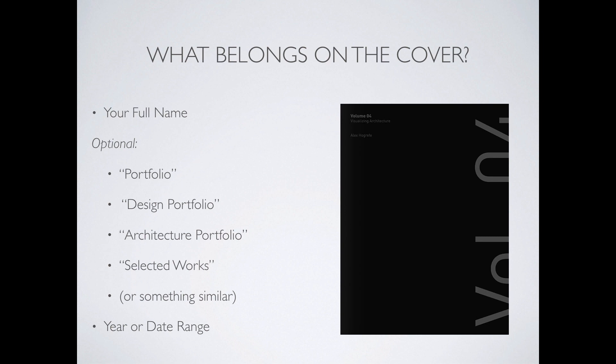Some people also like to include a year or a date range. In Alex Holgraf's case, he has volumes — volume one, two, three, et cetera. Remember that a portfolio is a living document. It should only contain projects that you've done in the last three to five years or so. That changes a little bit when you get further in your career, but generally speaking, three to five years is what you're looking at. So having a year or date range can sometimes solidify, 'hey, this is the work I've done in this time frame,' but again, that's optional.